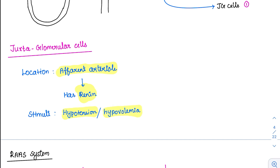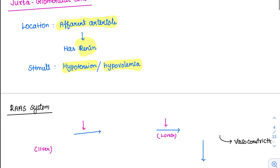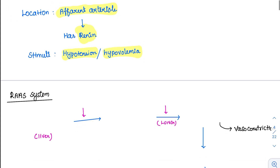Similarly, whenever there is hypertension or an increase in GFR, this has to be sensed and GFR should be reduced. That feedback mechanism is called tubuloglomerular feedback, which we will study shortly. But before that, we will try to finish the renin system — that is the renin-angiotensin-aldosterone system.